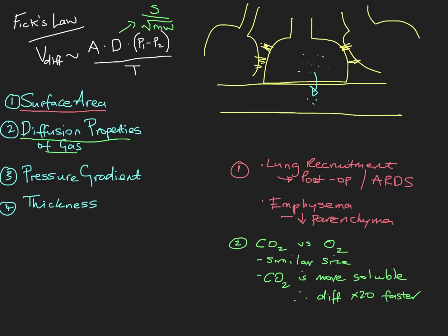Let's go to the next one — pressure gradient — because this is quite important. This is really what we do when we give people oxygen. The reason that gas diffuses from the alveoli into the capillary is that the partial pressure of the gas in the alveoli is higher than it is in the capillary. As these molecules want to expand into free space, they diffuse across this membrane until they reach an equilibrium. So if the partial pressure of oxygen in the alveoli is higher than in the blood, there's a diffusion gradient — that's the P1 minus P2 here.